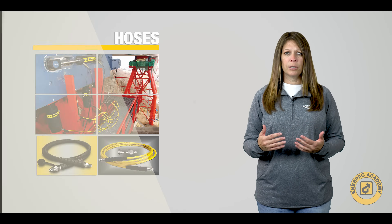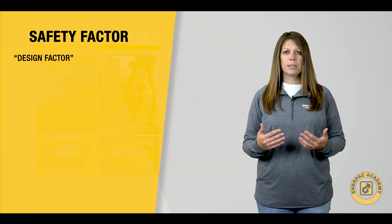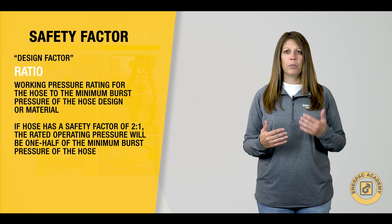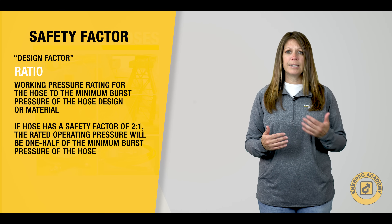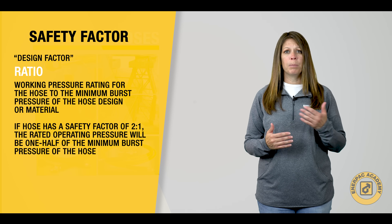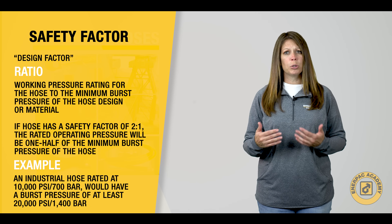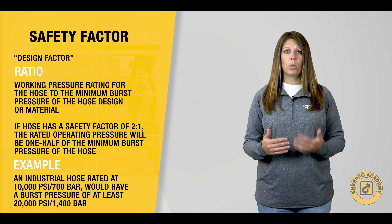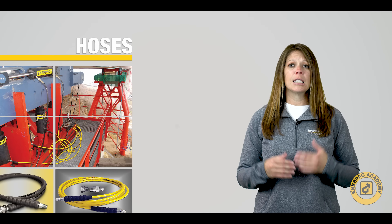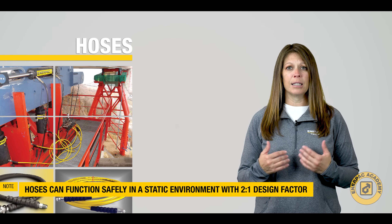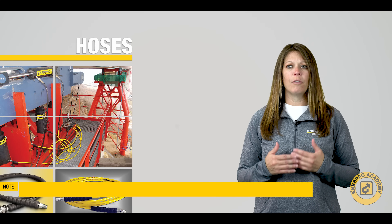Safety or design factor is another term used when specifying an industrial high-pressure hose. This value relates to the ratio of the working pressure rating for the hose to the minimum burst pressure of the hose design or material. If a hose has a safety factor of two to one, the rated operating pressure will be one-half of the minimum burst pressure of the hose. So, an industrial hose rated at 10,000 psi or 700 bar would have a burst pressure of at least 20,000 psi or 1,400 bar. Specifications for high-pressure industrial hydraulics consider these products to be used in static conditions and can safely operate with a design factor of two to one.